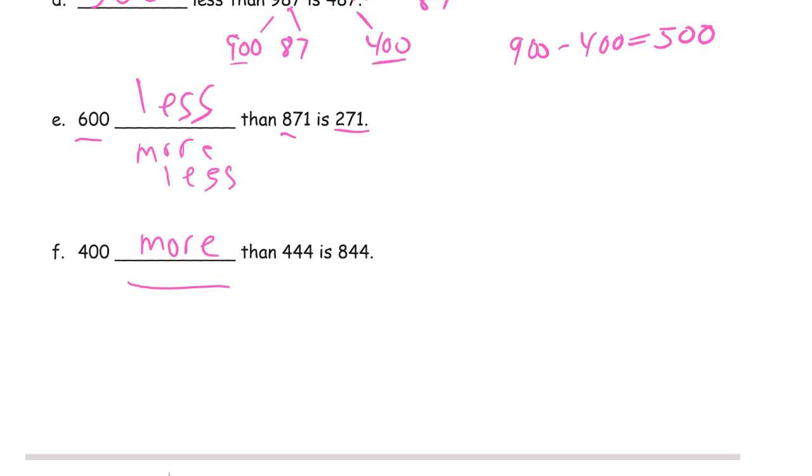400 more. Let's read it and see. 400 more than 444 is 844. Okay, that works. 400 more. That's what it should be.